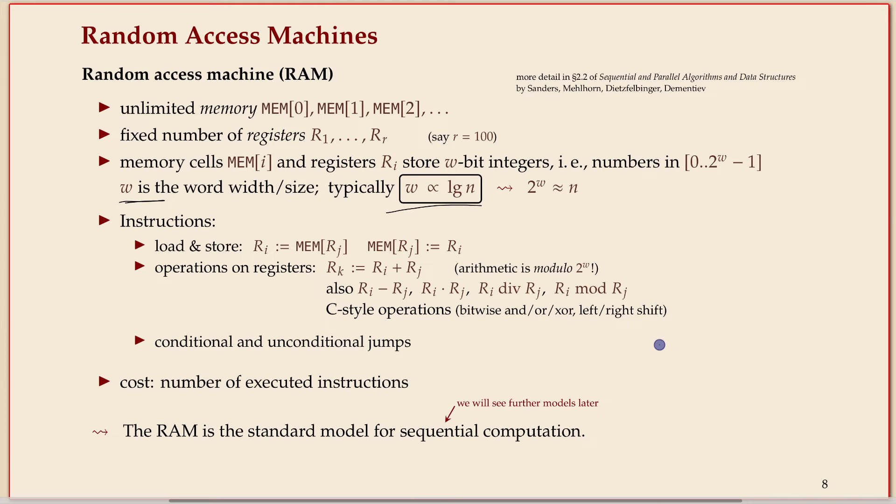The operations fill up most of the slide, but they're actually not too complicated. You can get a memory cell and copy its contents to one of your registers. You have a fixed number of registers that you can actually compute with. The memory is out there, and you have to get all the data into your registers, then you can compute and write it back. For the registers, I don't want to fix a concrete number. If you need five more, that's fine, but it's a fixed constant number. The number of registers does not grow with the input. You can say a hundred; that's usually enough for programs.